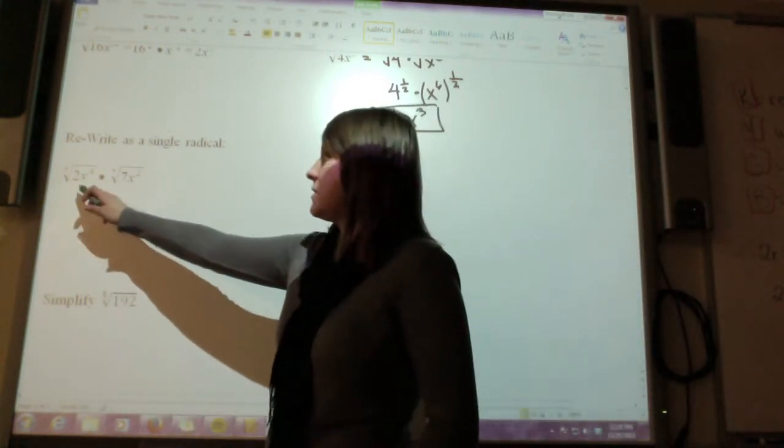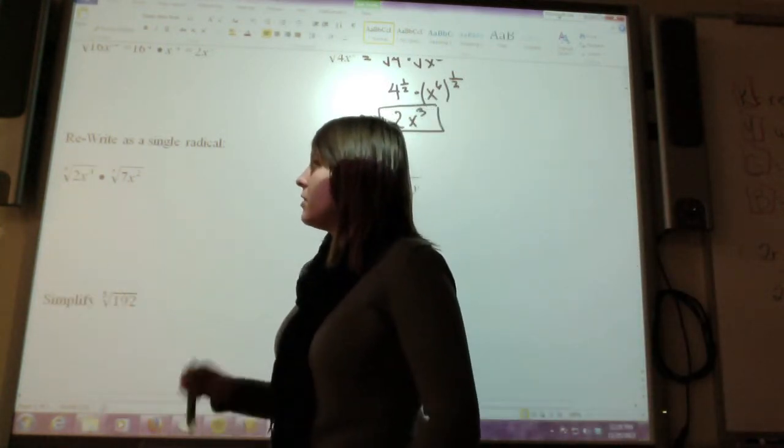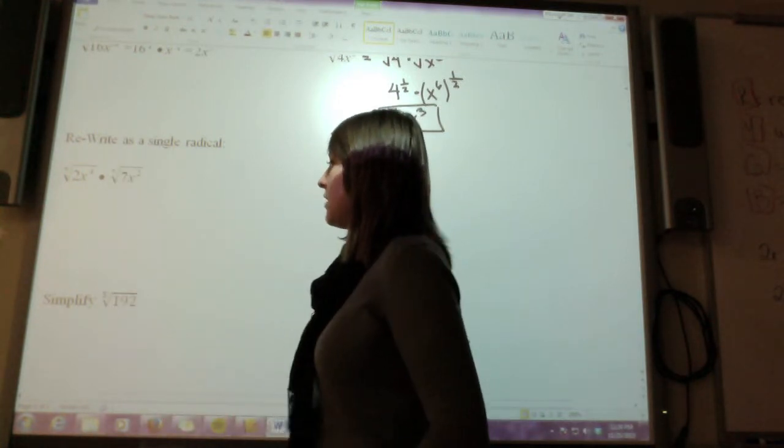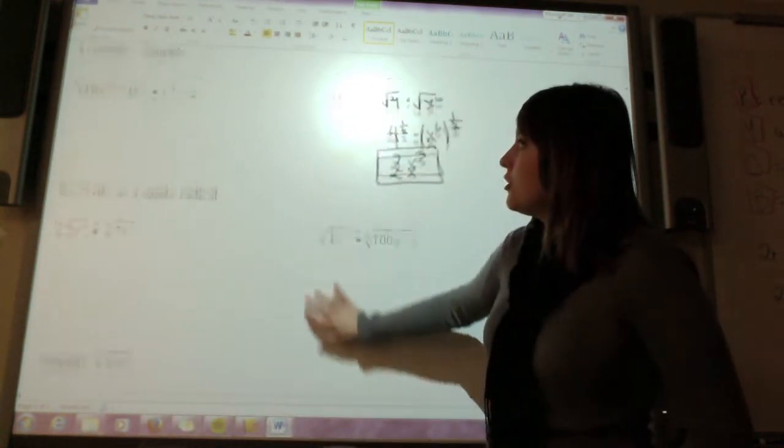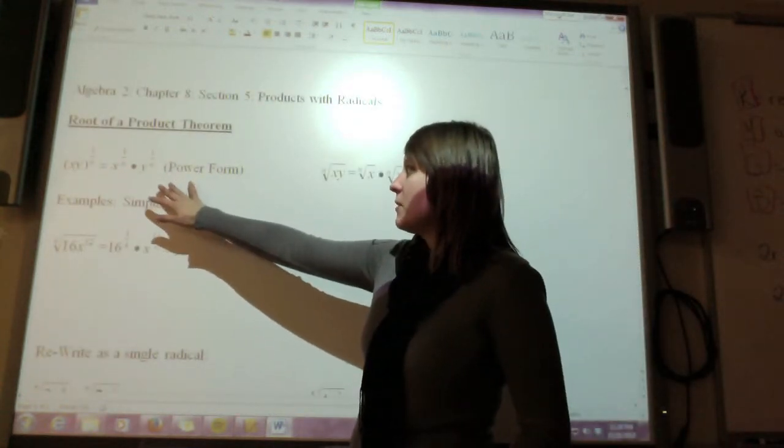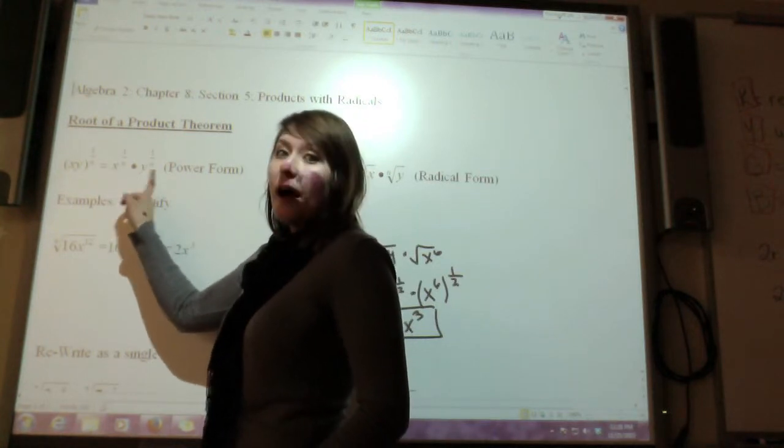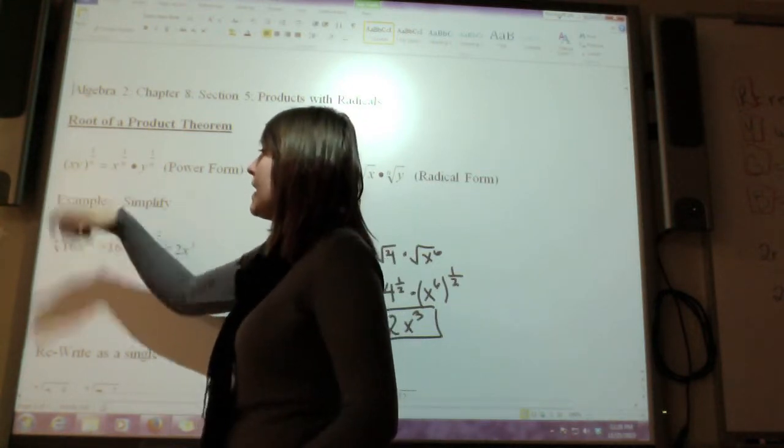So, over here, this is the seventh root of 2x to the fourth times the seventh root of 7x squared. If I look back up to my root of a power theorem, I can split this up, or I can go the other way, and I can actually combine them.